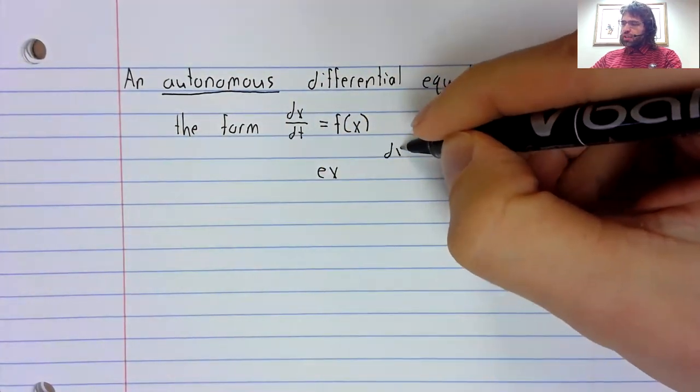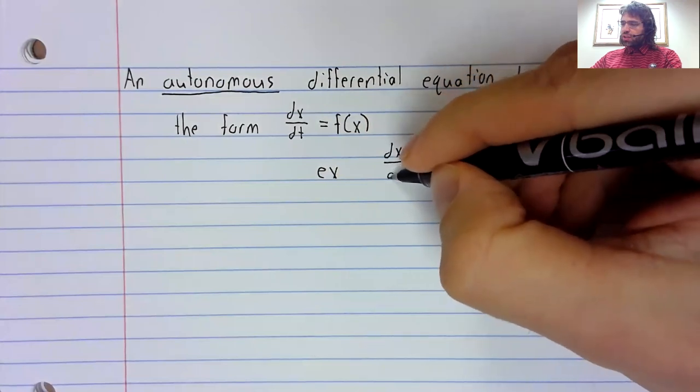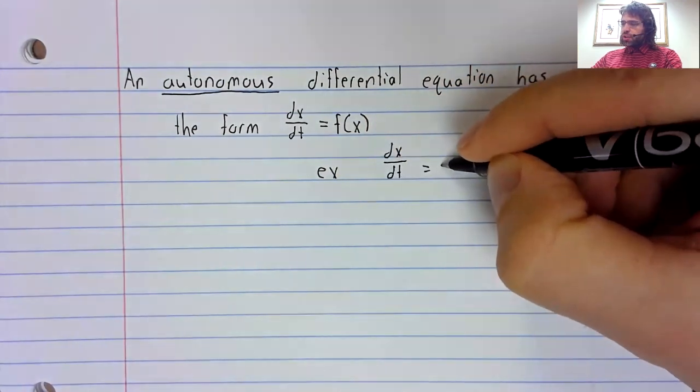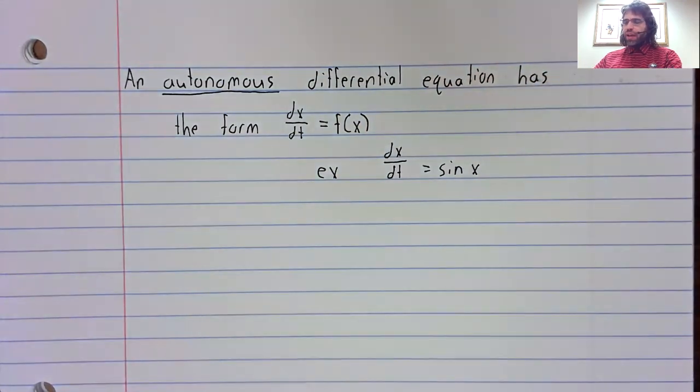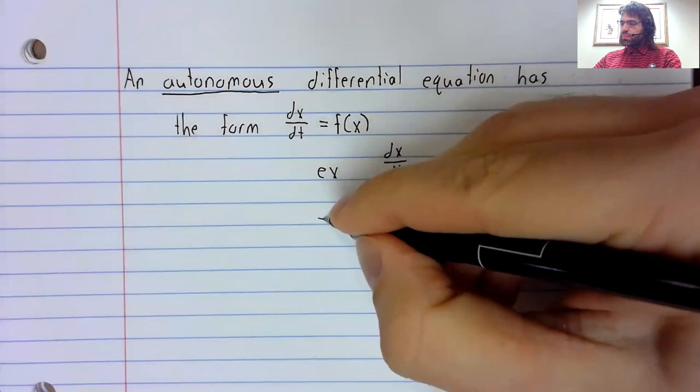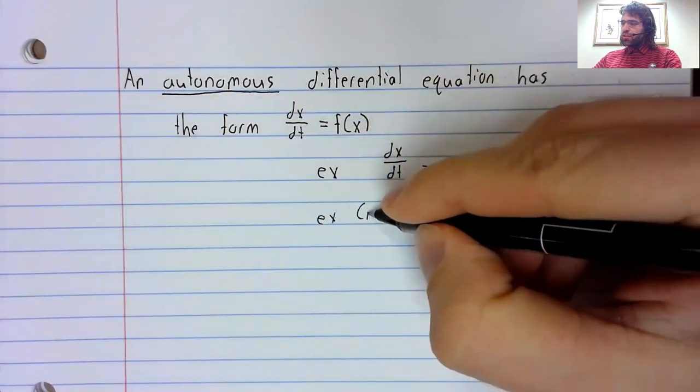So something like dx/dt = sin(x). Compare that to a non-autonomous differential equation.